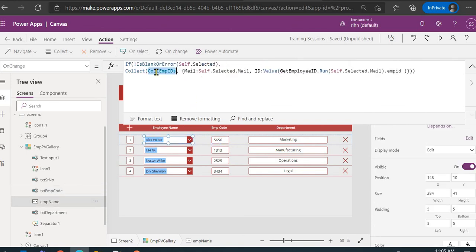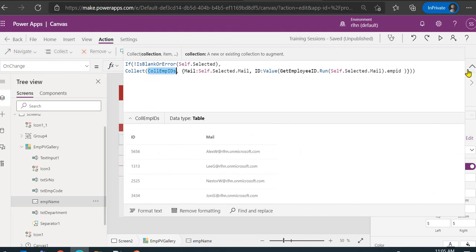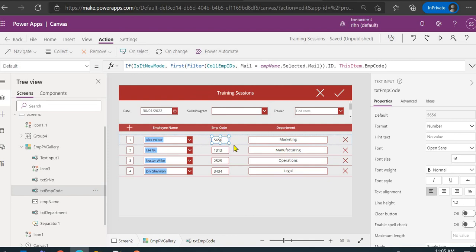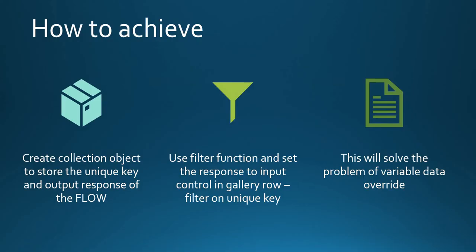To summarize: store the flow response in a collection instead of a variable, then use Filter and First functions to bind the correct response from the collection to the control in the same gallery row. Using a variable won't work because the same variable is shared across all rows. Using a collection with a unique key per row solves the problem and correctly stores the flow response for each gallery row.